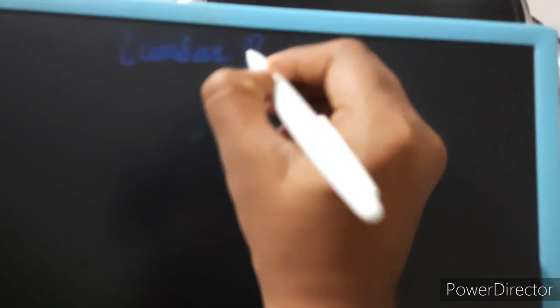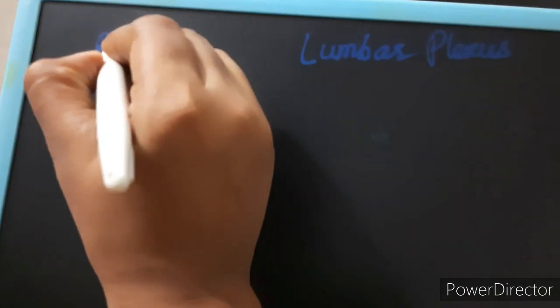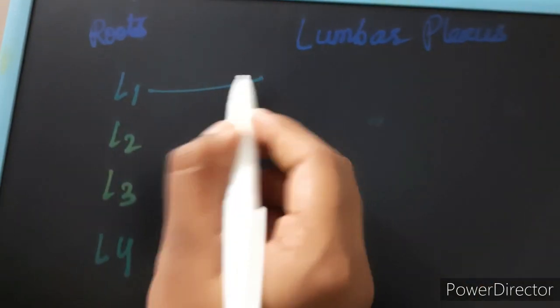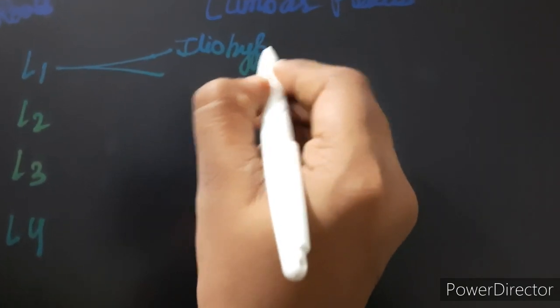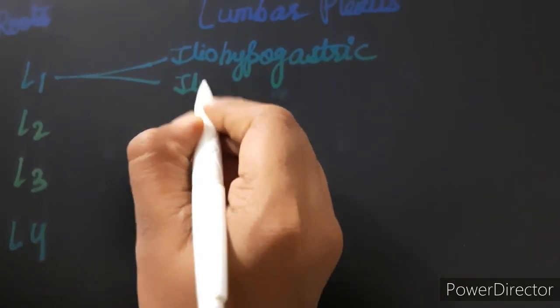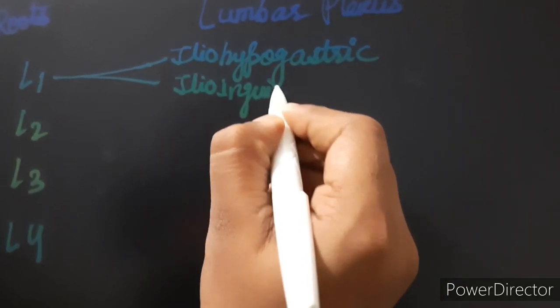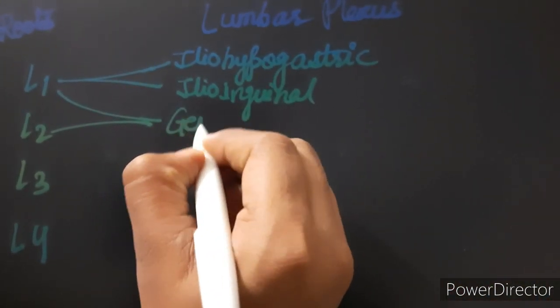Hey students, today we are going to see the lumbar plexus. L1, L2, L3, and L4 are the roots of the lumbar plexus. From L1 we get the iliohypogastric and ilioinguinal nerves, and twigs from L1 and L2 give the genitofemoral nerve.